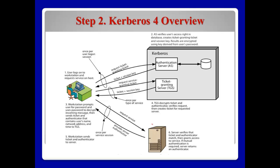Step two: cover overview. Cover has two versions: version 4 and version 5. This is an overview for cover version 4. There are three parts for cover: the first is the client system with the users, the second is the cover system — we call it the KDC — which has two parts AS and TGS, and the third is the application server. Between client, cover, and application server, there are six steps to use this application server.